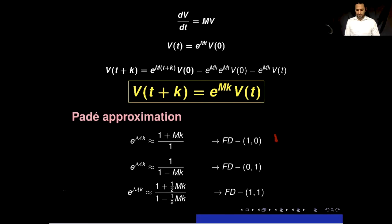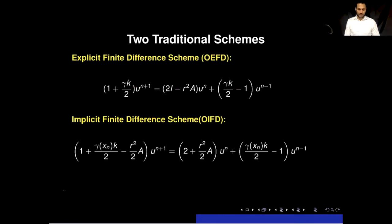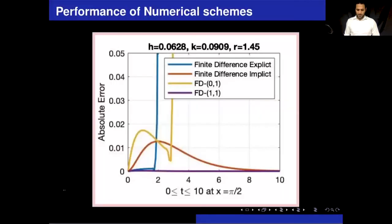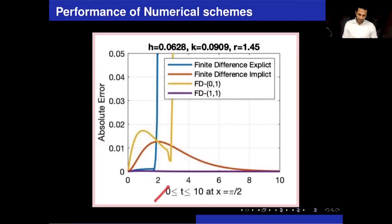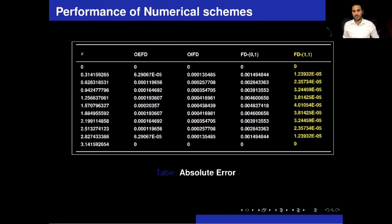To show the numerical performance, I will pick Rfd10 and Rfd11 and compare them with two traditional schemes: the explicit finite difference scheme and the implicit finite difference scheme. On this graph, the y-axis represents absolute error, the x-axis represents time from 0 to 10, and the curves show the solution at a fixed value of x = π/2. The graph shows that the absolute error of Rfd11 is significantly smaller than the traditional implicit finite difference scheme. Quantitatively, as shown in the table, Rfd11 improves upon the traditional implicit finite difference scheme by two digits of accuracy.